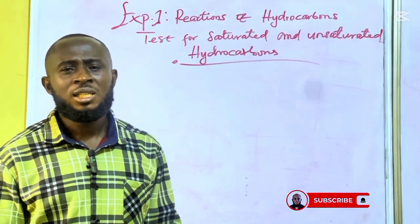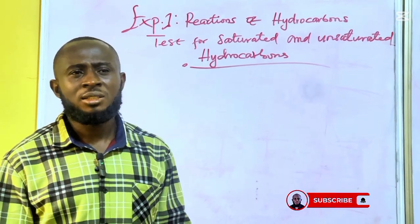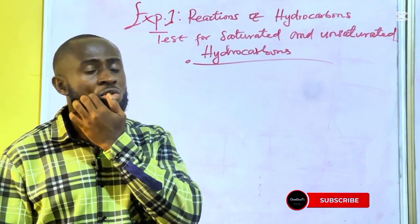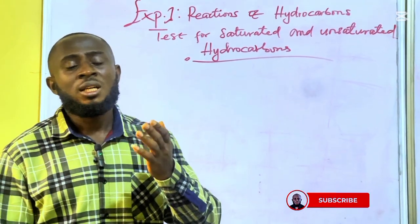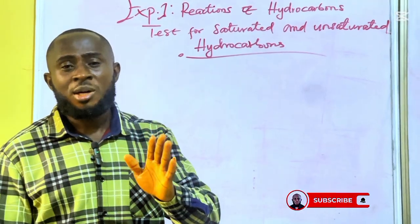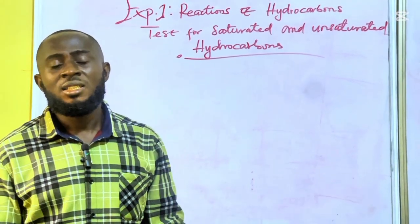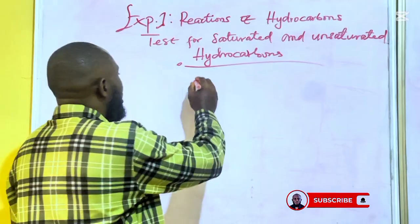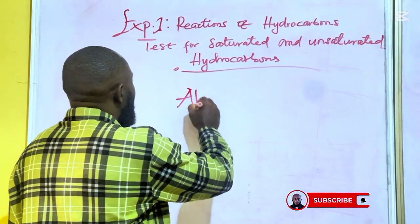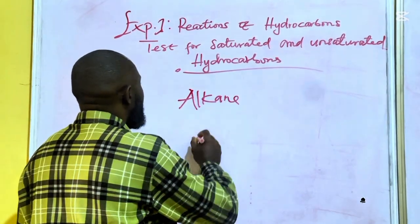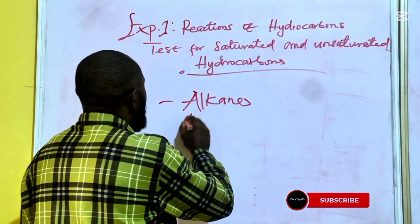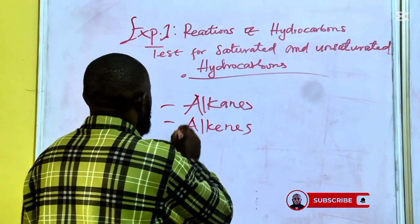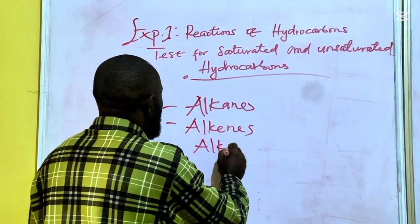There are several types of functional groups, but organic compounds are also classified into three: we have alkanes, we have alkenes, and we have alkynes.